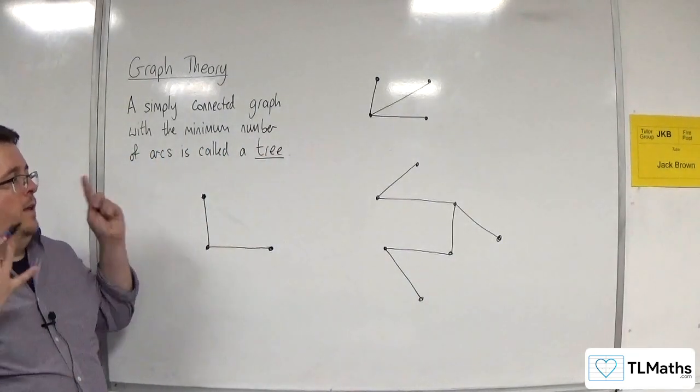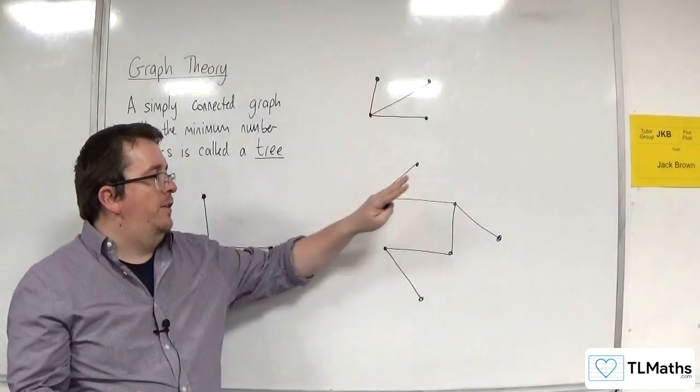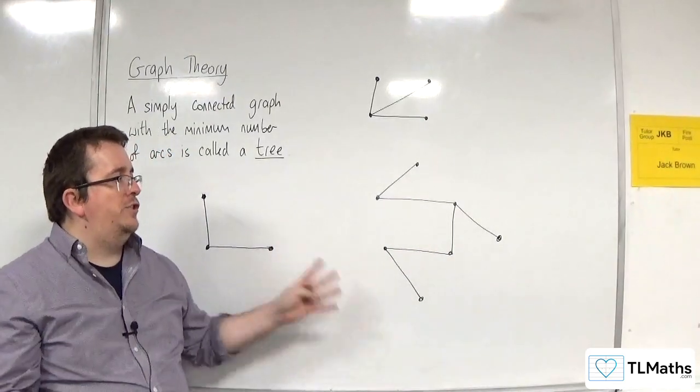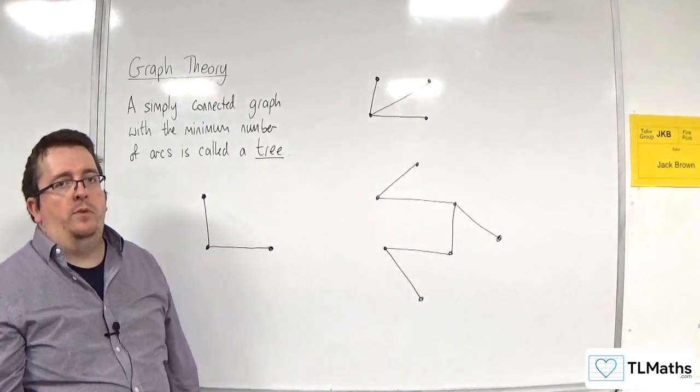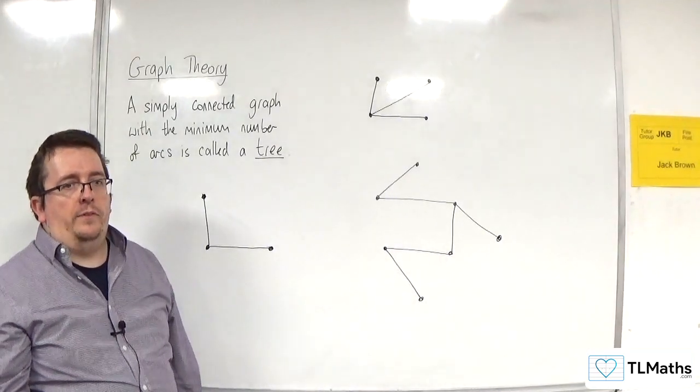So each is a connected graph. It is simple. There are no multiple edges. There are no loops. And I've used the minimum number of edges in order to connect all of the vertices.